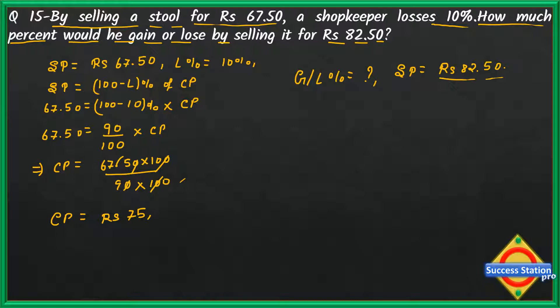We can see gain or profit because SP is greater than CP. Gain equals SP minus CP, so 82.50 minus cost price 75, and the value of gain is rupees 7.50.